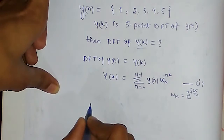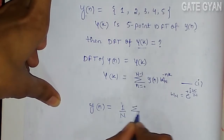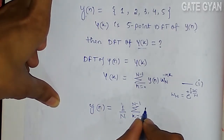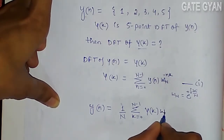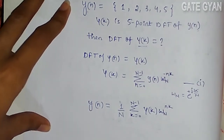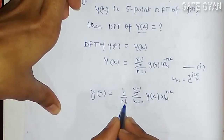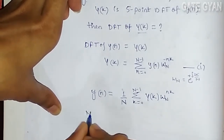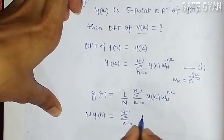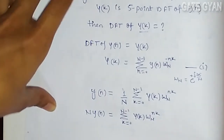I can write y[n] in terms of the IDFT as (1/N) times the sum from k=0 to N-1 of Y[k] times W_N^(-nk). From this I will derive my expression. Bringing N to the other side gives N·y[n] = sum from k=0 to N-1 of Y[k] times W_N^(nk).